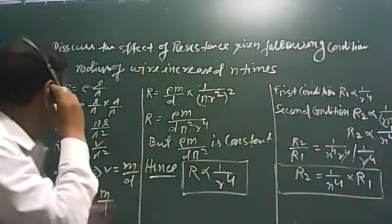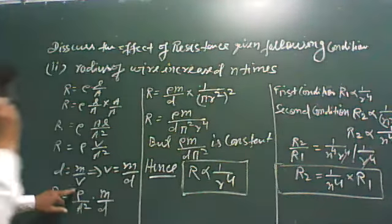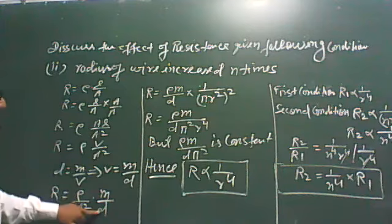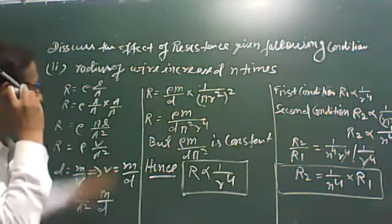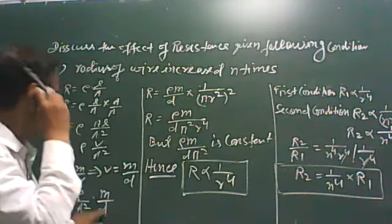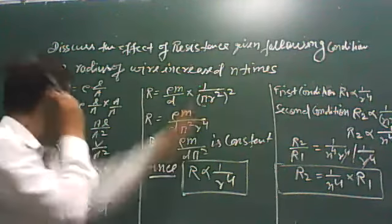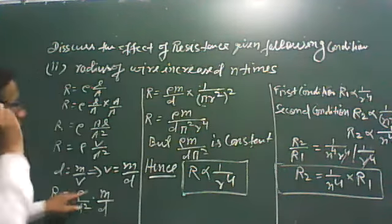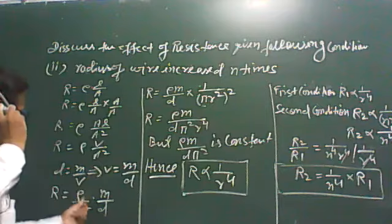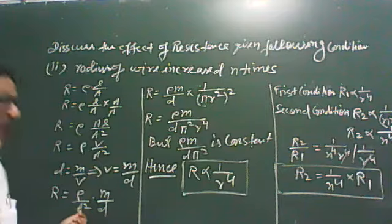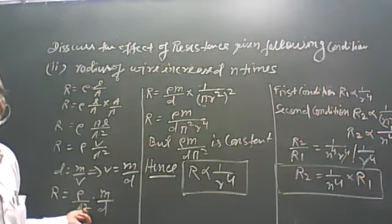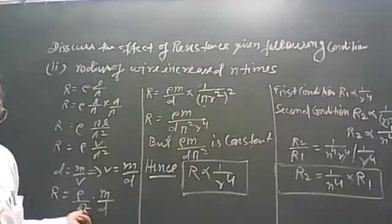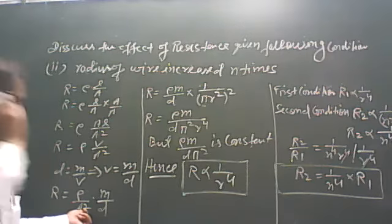R is equal to rho times m upon d, row m upon a square, multiply one upon d. We can put the value — rho m upon d, multiply one upon a square. And 'a' means area of the wire, and area of the wire is equal to pi r square, because the area is cylindrical and the base area is pi r square.